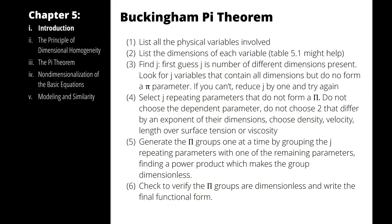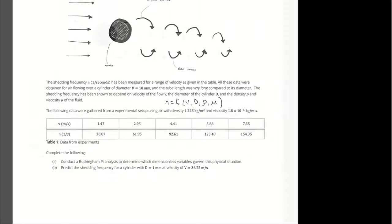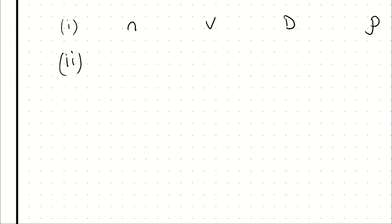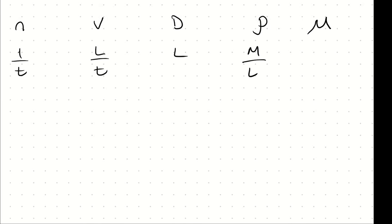The first step in this process is going to be to list all the physical variables involved. We know that the shedding frequency is a function of velocity of the flow, diameter of the cylinder, density of the fluid, and viscosity of the fluid. When we start our Buckingham Pi analysis, we list those five variables. The next step is to identify the dimensions of each variable. Frequency is 1/time, velocity is length/time, diameter is length, density is mass/length³, and viscosity is mass/(length·time).